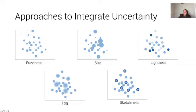But we can also do things like make data points that are uncertain more fuzzy, make them smaller, make them lighter, make them foggier, and also even make them sketchier. It turns out if things look sketchy and hand-drawn, people interpret that as being more uncertain.